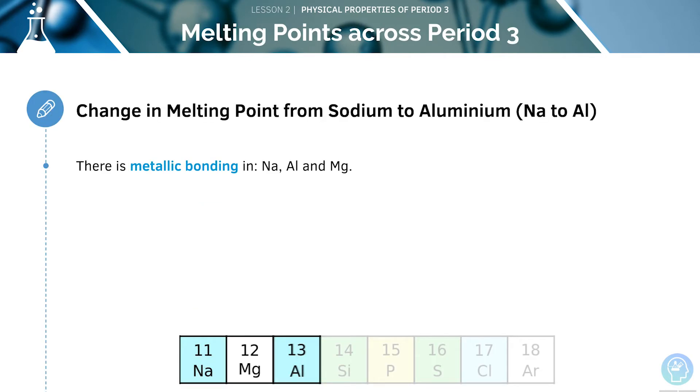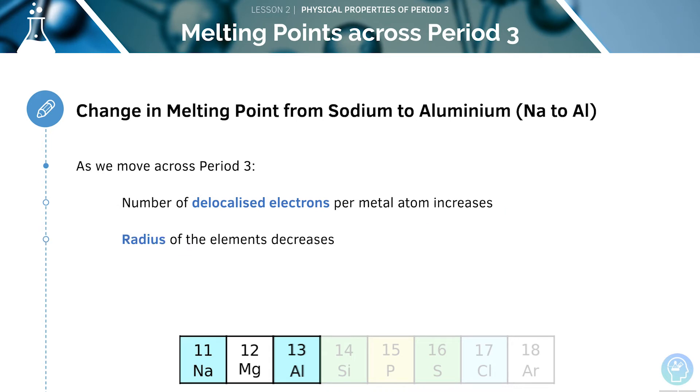Sodium, magnesium and aluminium are all metals and therefore will have metallic bonding. As we learnt earlier, the more delocalised electrons present, the smaller the radius of the atom. The higher the boiling point and melting point of the metal will be. As we move across period 3, the number of delocalised electrons per metal atom is going to increase, and the radius of the element will decrease. This means that the melting point will increase due to the greater electrostatic attraction between the positive ions and the delocalised electrons. This means that the metallic bond is stronger and requires more energy to break.